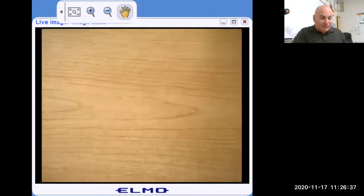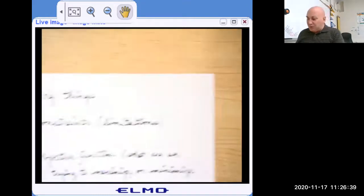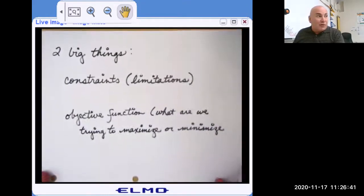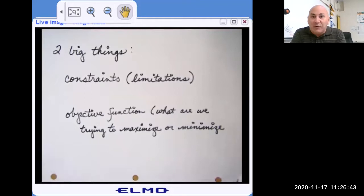The two big things to look for in linear programming are your constraints and your objective function. What's limiting us? For instance, maybe we're going to make two types of cookies. Maybe we're going to make chocolate chip cookies and snickerdoodles. Well, chocolate chip cookies take this long to prepare. So time is a constraint and they take this long in the oven. So oven time is a constraint.